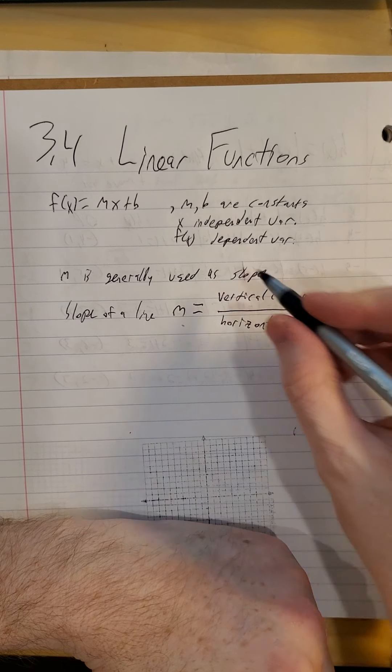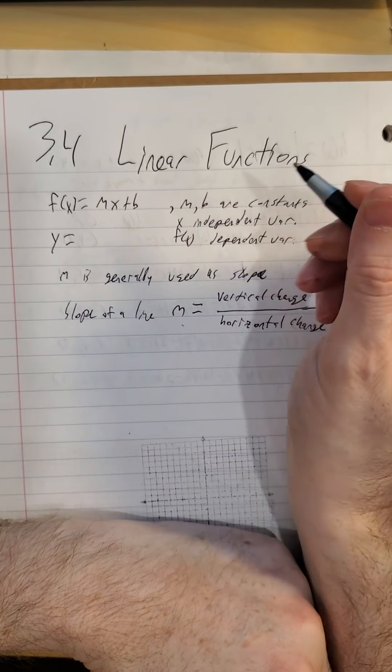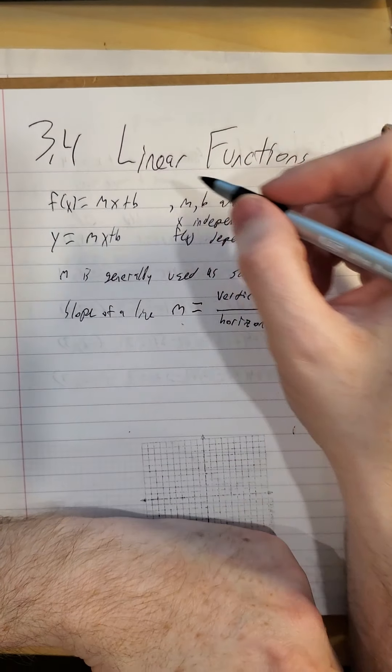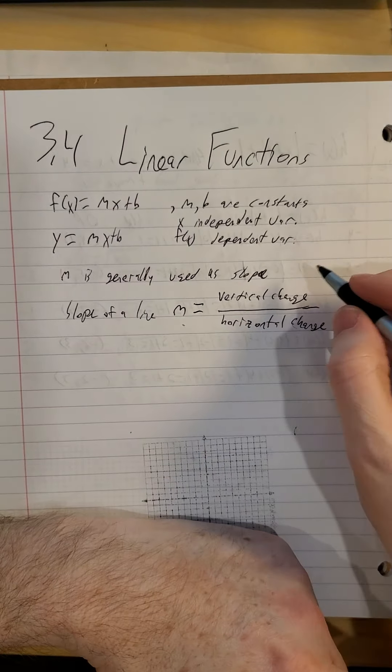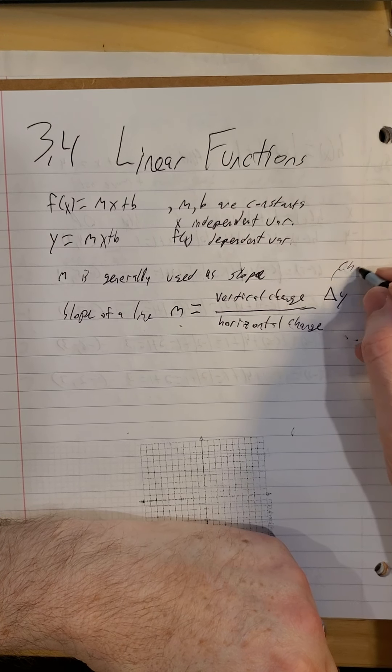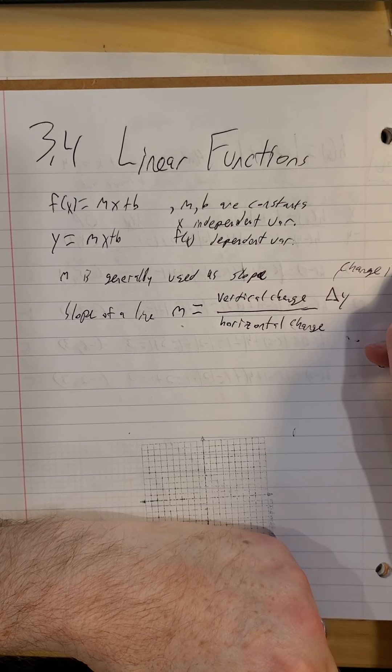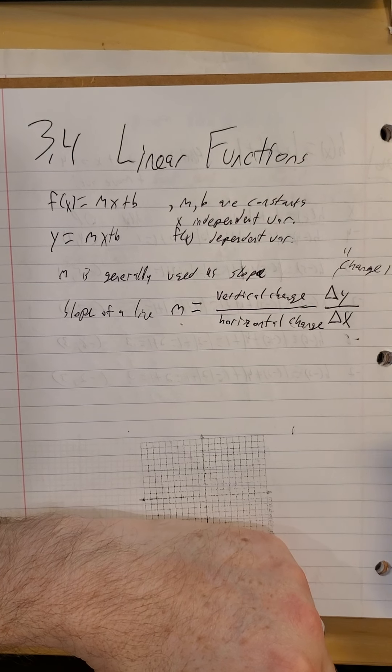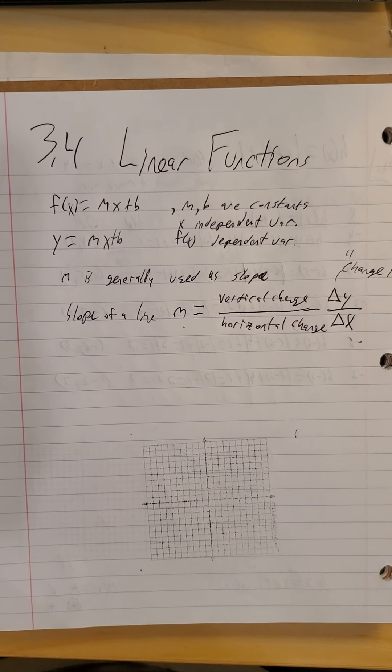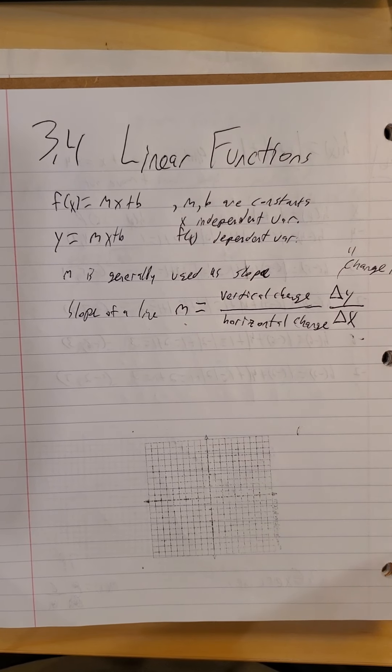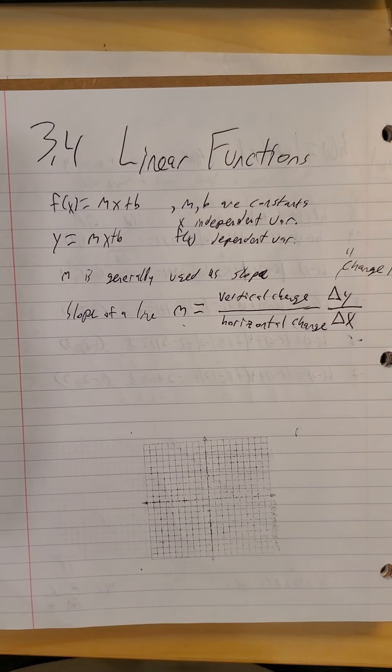Vertical change, if we use the other version of a linear equation, y equals mx plus b. A vertical change would be change in y, delta being the change in, divided by the change in x. And that ratio will be the same no matter what ordered pairs you pick out from a function.